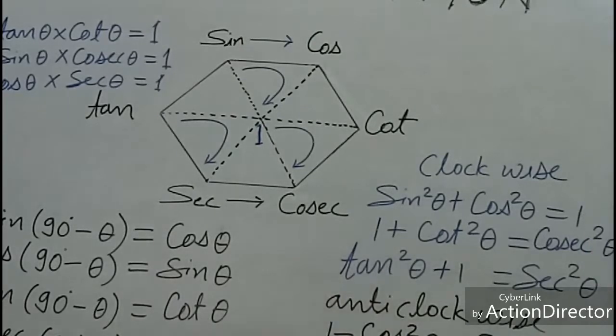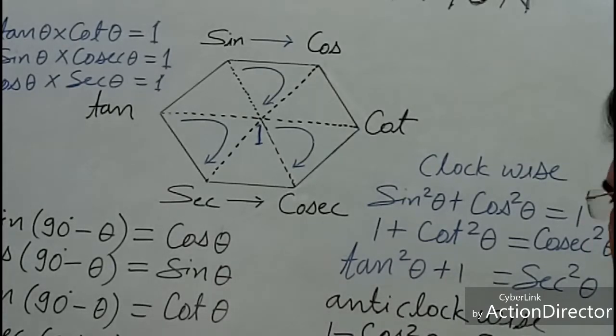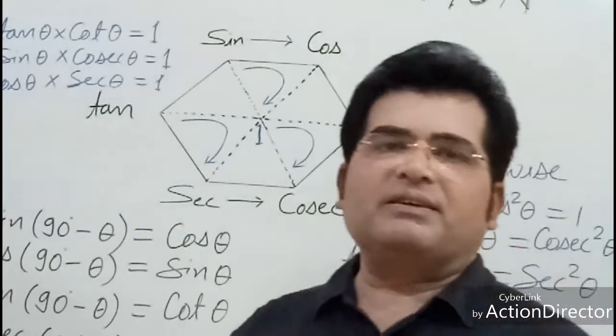One minus cos square theta equals sine square theta. Cosec square theta minus one equals cot square theta. Sec square theta minus one equals tan square theta.